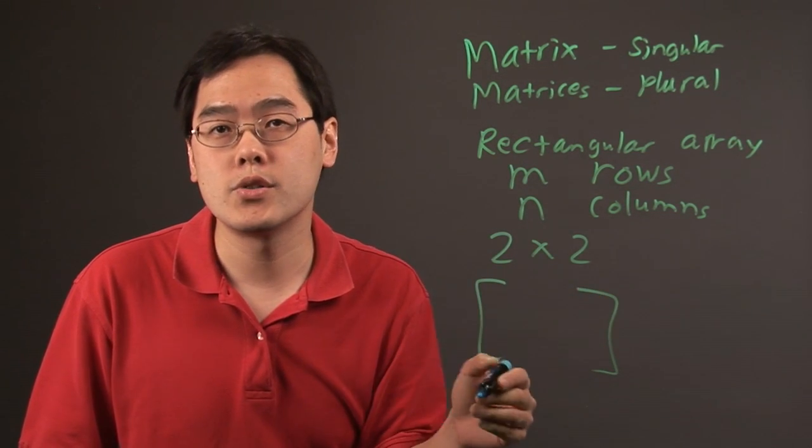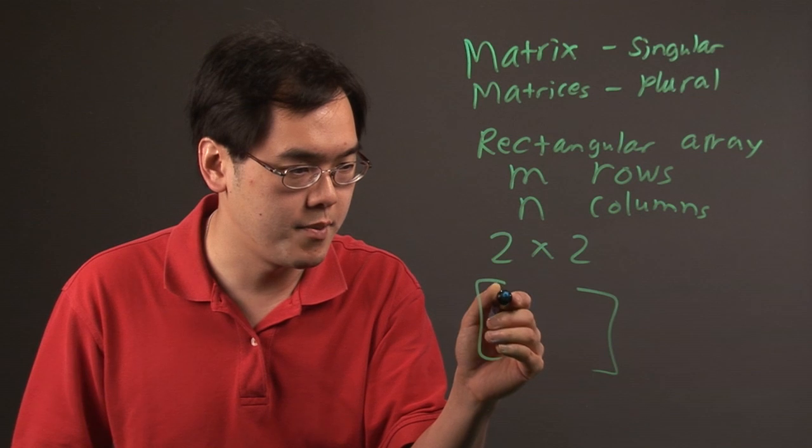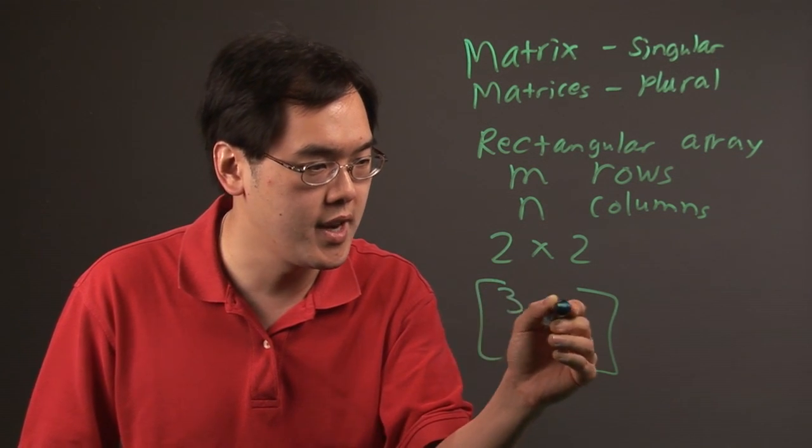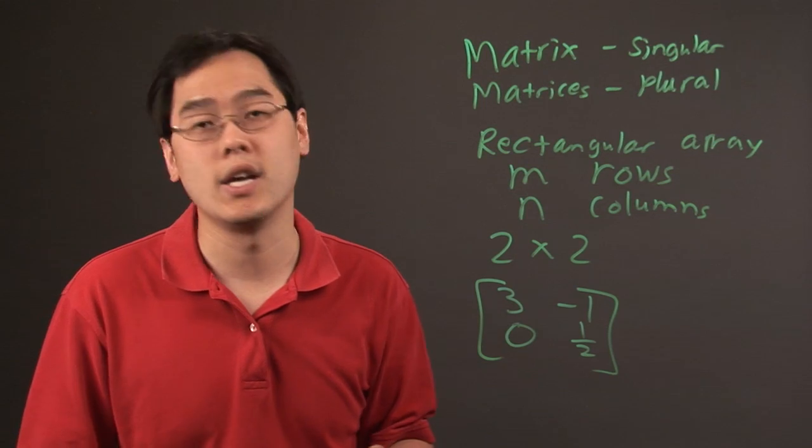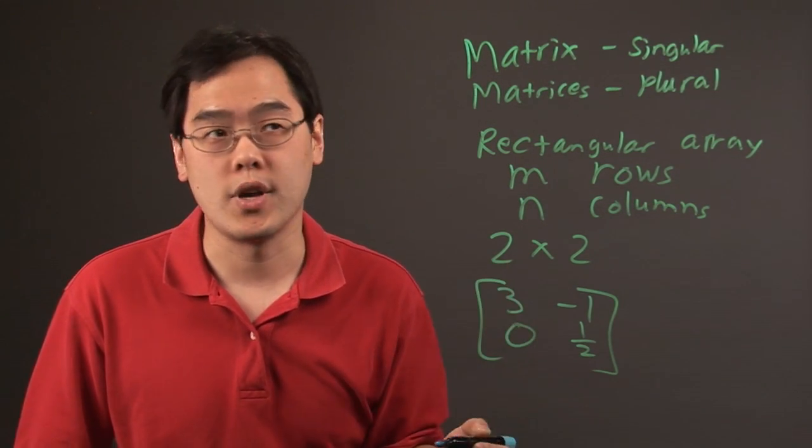You would just put numbers or variables, if you have unknowns. Let's just say 3, negative 1, 0, and 1 half, just to make things interesting. And this is an example of one matrix.